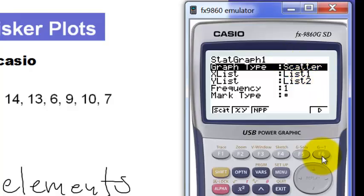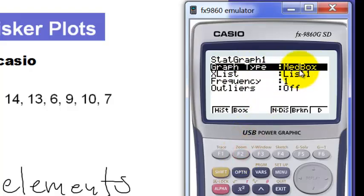Press F6 to access more menu. Now we have here the box, so we have to press F2. Note that, as I press F2, the graph type will change into box and whisker plot. Alright, now we are ready to graph this data.